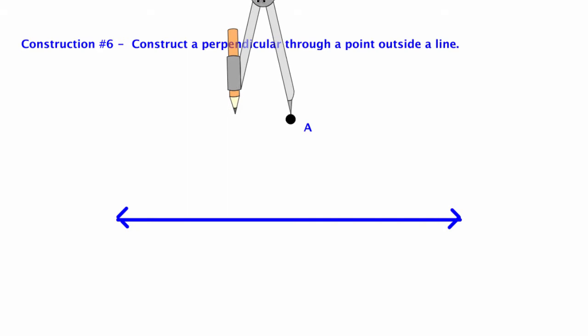Put your compass point on point A or whatever point you have. Open your compass enough so that it's going to swing an arc that crosses the line in two spots. So you see I'm on point A and I swing across the line. And now I have two spots down below.